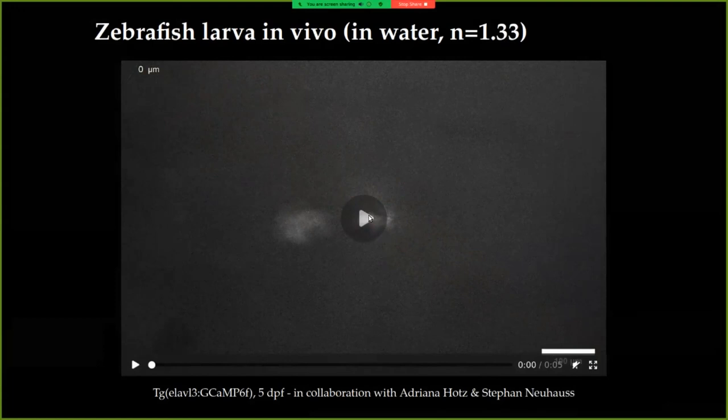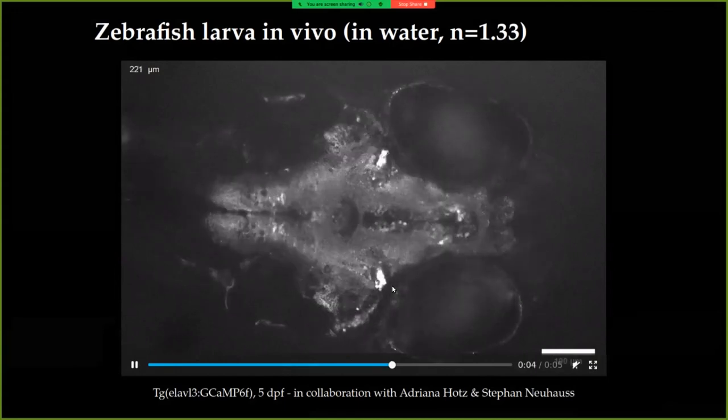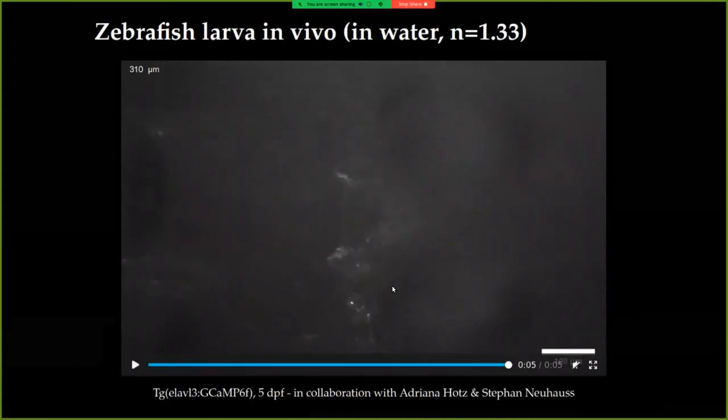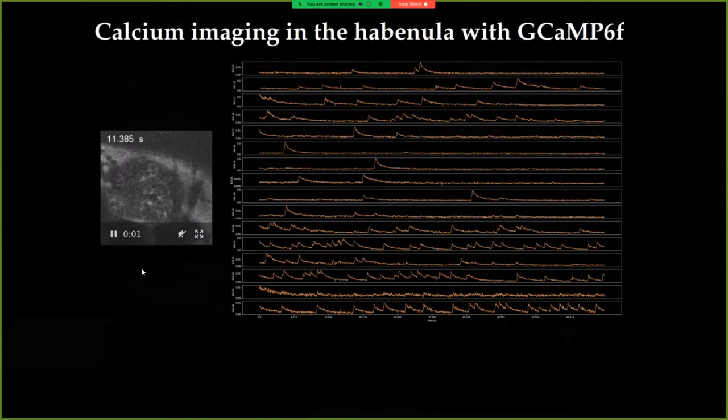But because it's a multi-immersion objective, we can also image live samples, so in this case this is a zebrafish larva imaged in water, so this was just a stack showing the brain, and then we can select a ROI for calcium imaging at high frame rates. And then we can see the neural activity, in this case, imaged with the calcium indicator GCaMP6f, and we can recover nice, very standard calcium transients, similar to what you could do with standard water immersion objectives.